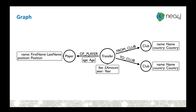This is what the graph equivalent looks like. We'll go through the terminology. Highlighted in red we have what we call nodes — nodes are equivalent to the records or rows from that SQL table. Nodes are used to represent the data or entities in our domain: we've got a node representing a player, nodes representing clubs, and nodes representing transfers.